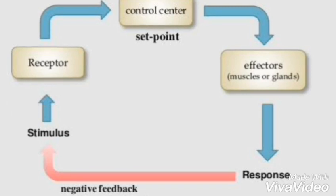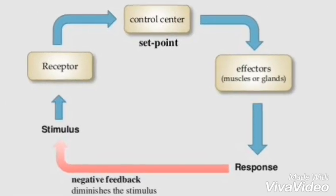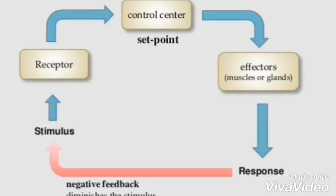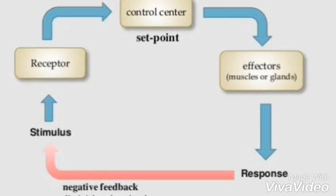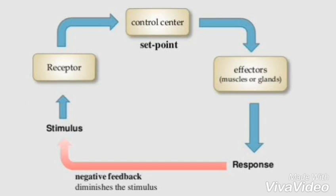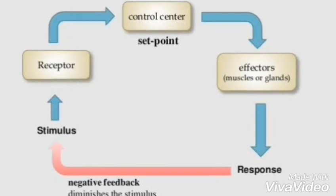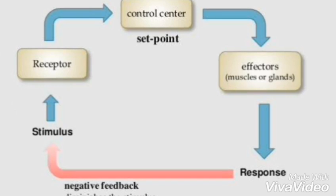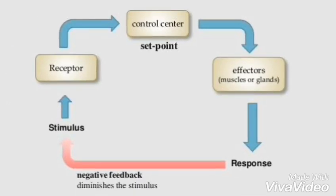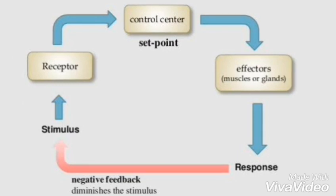This information is then received and processed by the control center, also known as the integration center. Afterwards, the effector responds to the commands of the control center by either opposing or enhancing the stimulus — the change that occurred in the internal or external environment. This process continues to work to re-establish and maintain homeostasis.